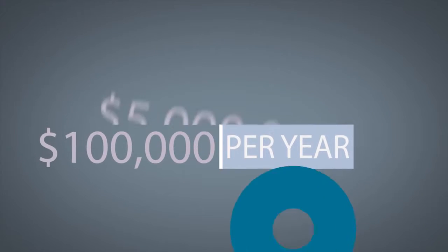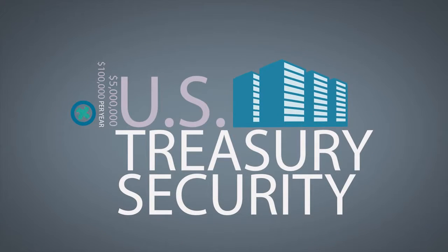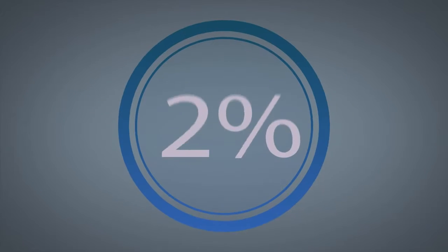As an example, to create an ongoing income of $100,000 per year, you would need to invest $5 million in a 10-year U.S. Treasury security paying 2%.